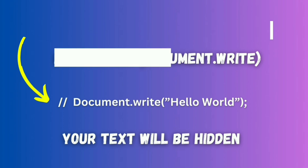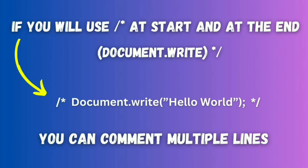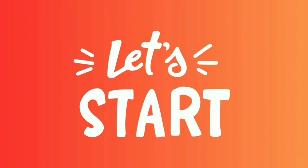In simple words, when you use two slashes and write after them, the text will be hidden and considered as a comment. Now let's move to the second one — the multiple line comment. Just look at my screen. There is a line written 'document.write your text' and after it slash-star, and there is a comment, and at the end of the comment there is a star-slash. If you want to comment multiple lines, you just need to put slash-star at the start and star-slash at the end.